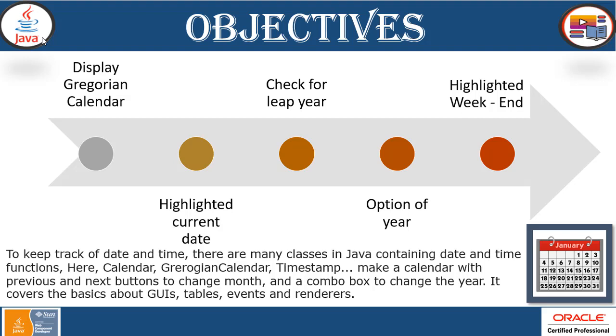Gregorian calendar, timestamp — and we'll make a calendar with previous and next buttons to change the month, and a combo box to change the year.